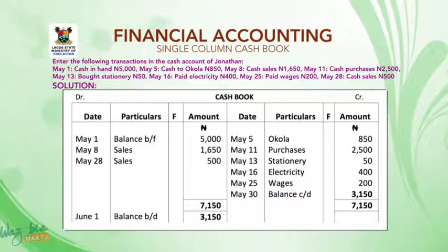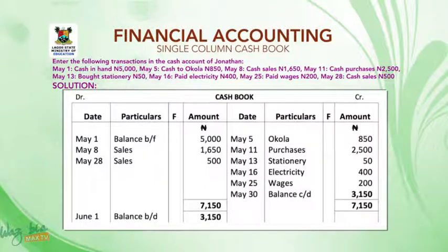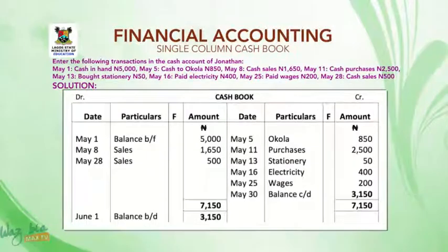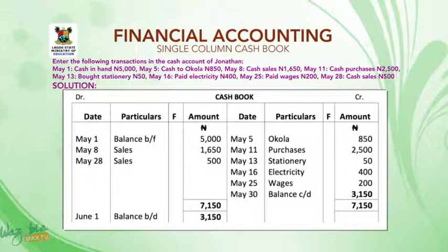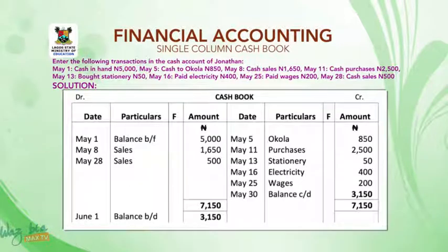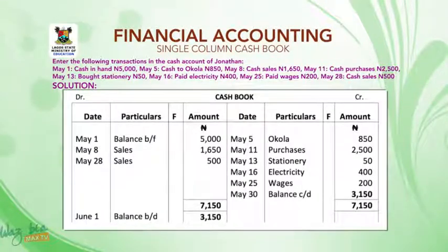The next thing you have to do is total the debit side and total the credit side. Find the difference between the two. Looking at this question, you will discover that the debit side is higher in value than the credit side. So you find the difference, and that difference — you write the last day of the month on the credit side, which is May 31; under particulars write 'balance carried down'; and under amount write the difference, which is 3,150 naira. Then write the totals and balance it. That balance carried down on the credit side will be brought down to start another month — June 1st — as 'balance brought down' on the debit side.